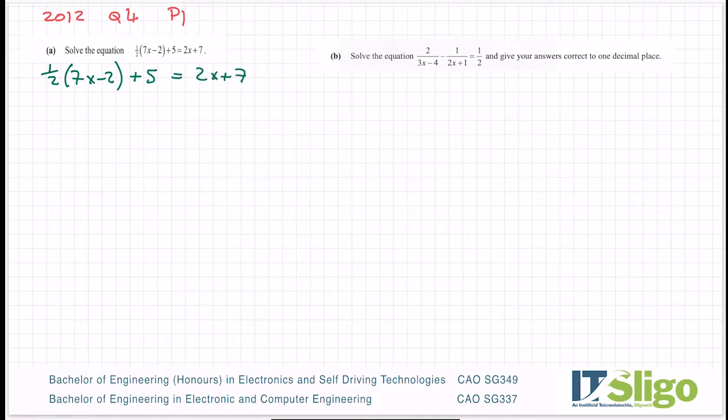So one-half times 7x, you can do it on your calculator or in your head, you'll get 7 over 2x or as a decimal 3.5x. Minus 2 times one-half will be minus 1. You're finished multiplying by the half there. So you just take down the plus 5 and then the right-hand side, there's nothing to be done to that.